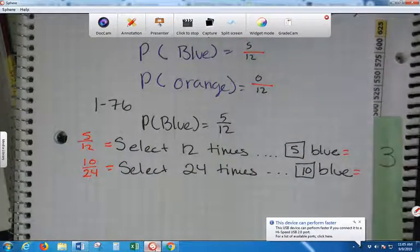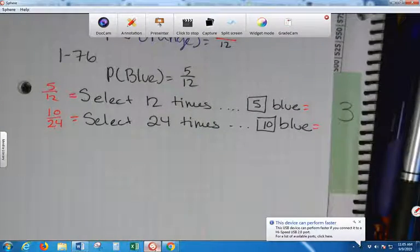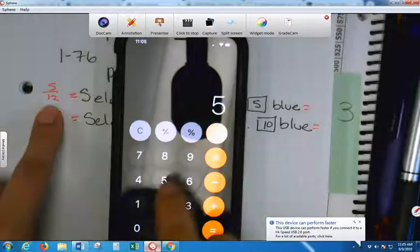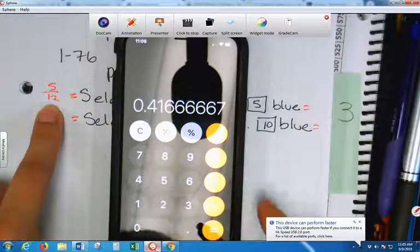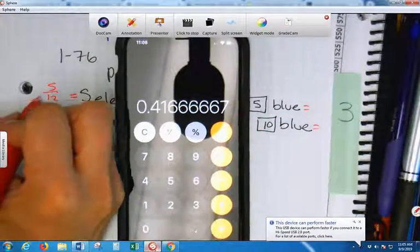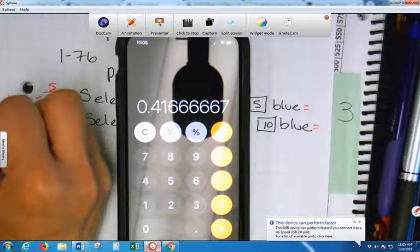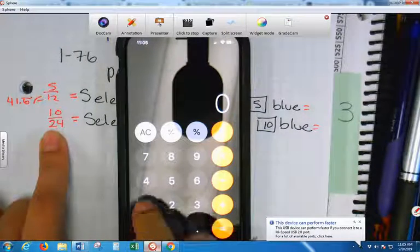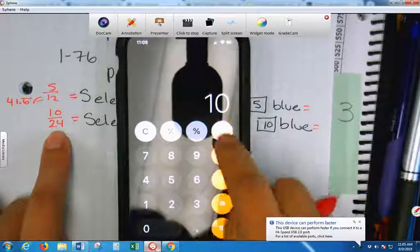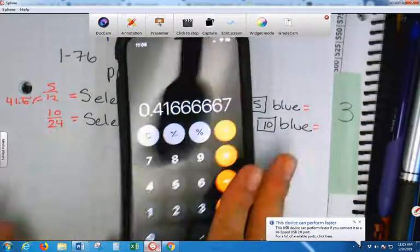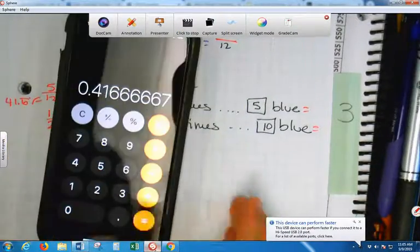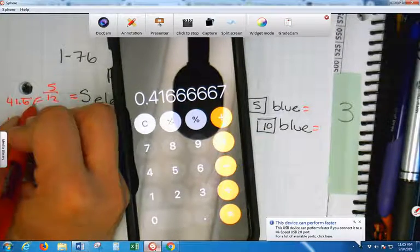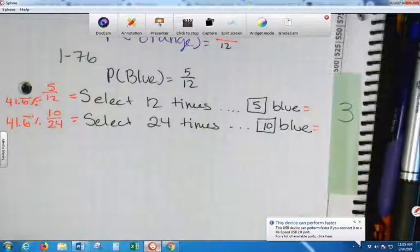You know, these fractions kind of confuse me. I'm going to turn them into percent. So, five out of twelve is what percent? Forty-one point six. Let's do it for this one. What number do I type in first? Ten. Ten divided by twenty-four. Forty-one point six. Oh. It doesn't change. All you do is double. But did it change? No.